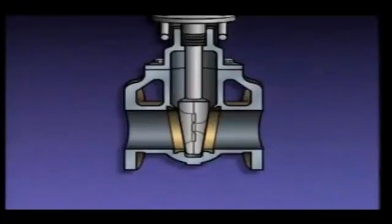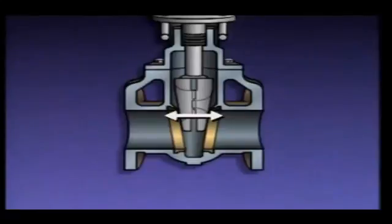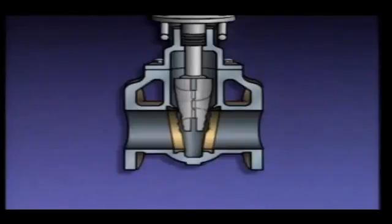Gate valves are normally used in on-off applications, but in an emergency they can be used to throttle flow. However, long-term use as a throttling valve can damage a gate valve. When the disc is raised slightly, fluid flow creates turbulence, which causes the disc to swing from side to side, chattering against the seat. This chattering causes wear on the seat and disc, and eventually the valve will not shut off flow when completely closed.